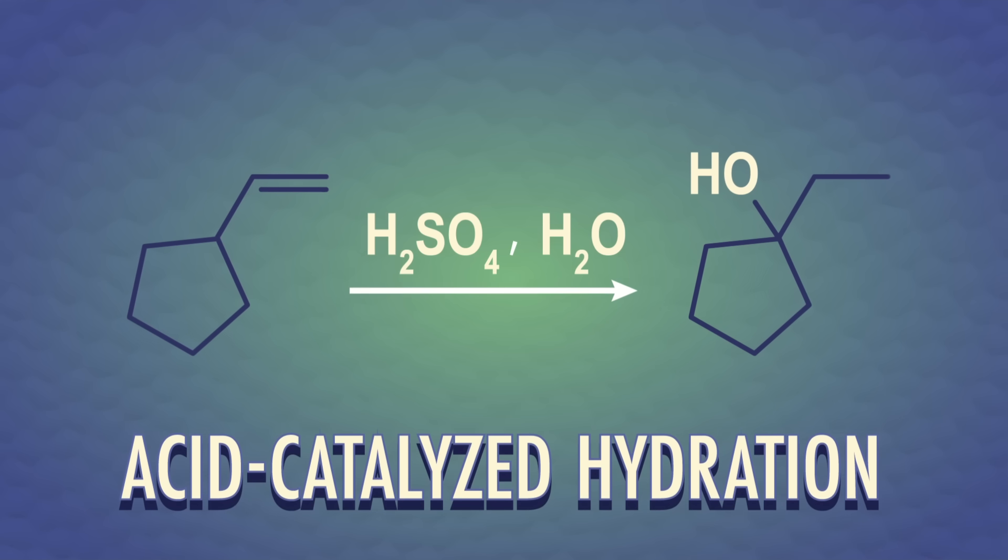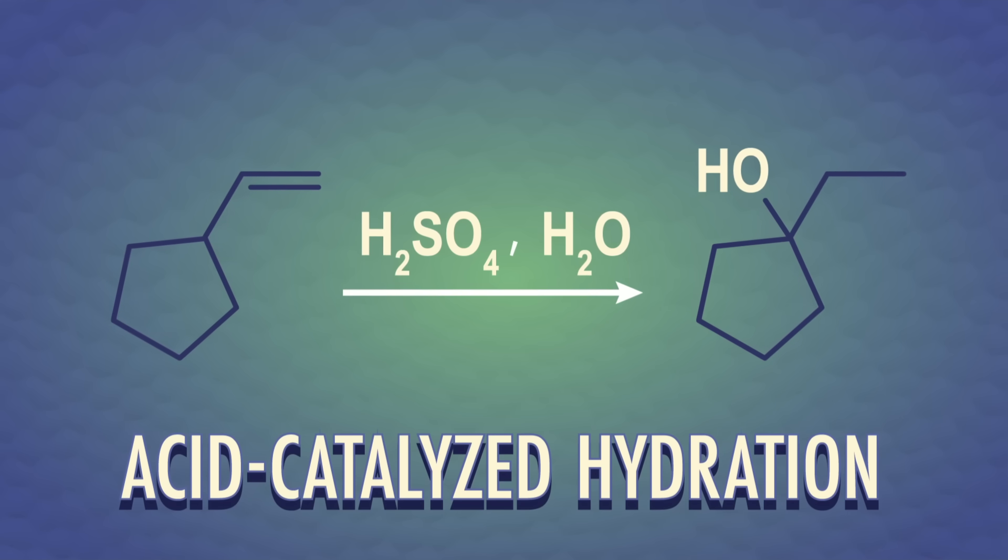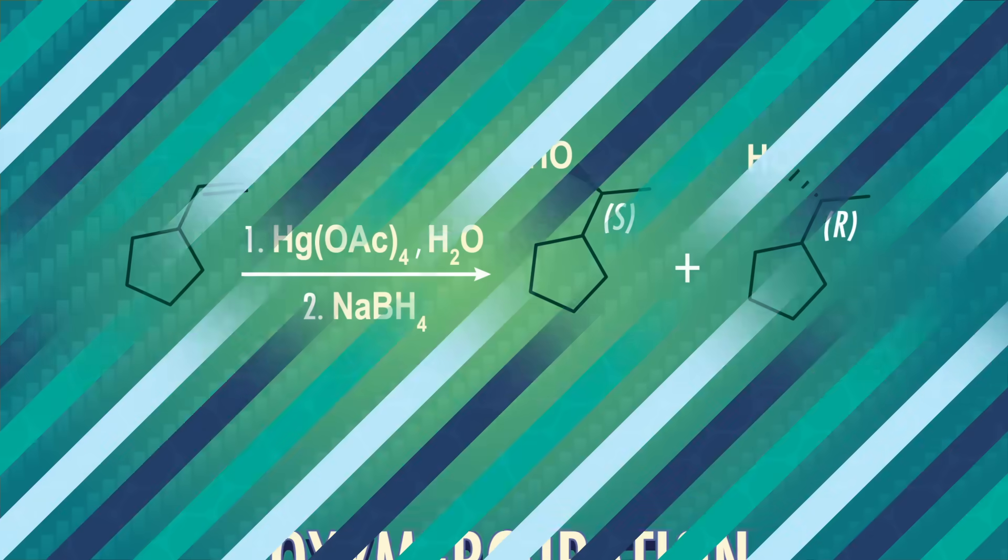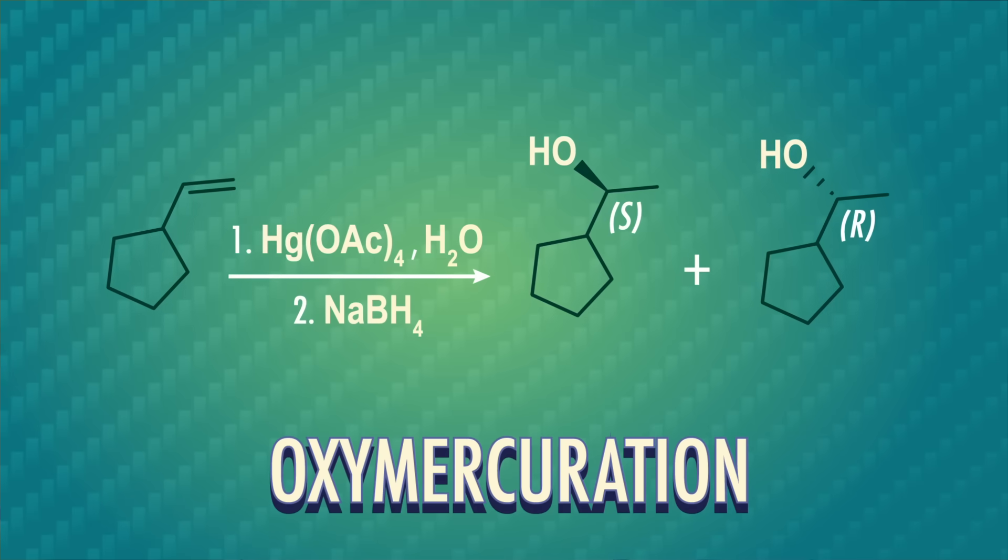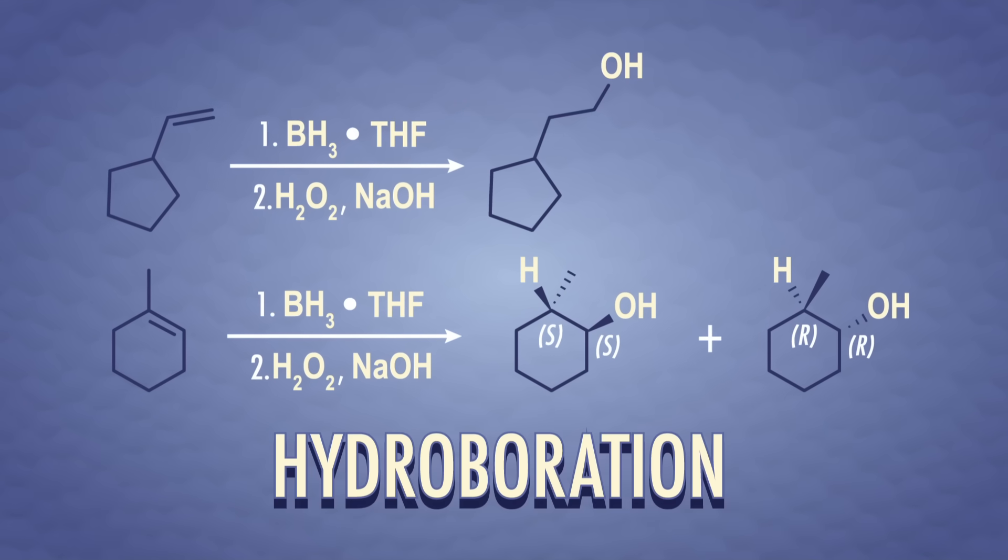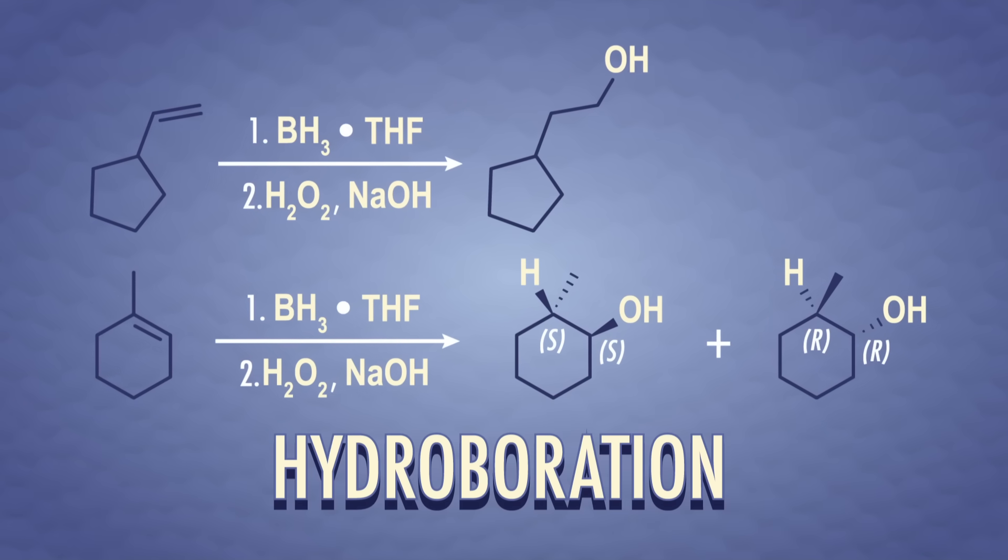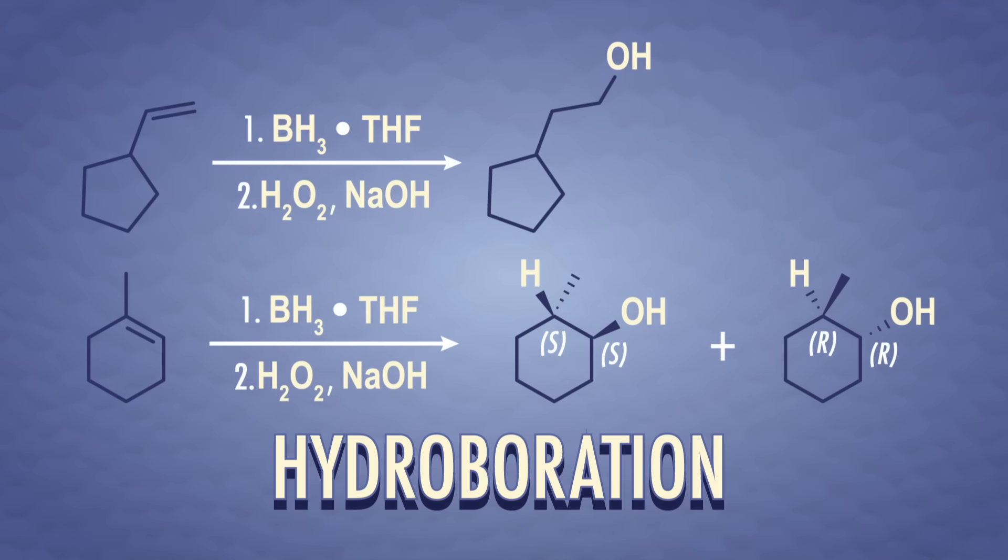Acid-catalyzed hydration has Markovnikov regioselectivity, is not stereoselective, and can have carbocation rearrangements. Oxymercuration has Markovnikov regioselectivity and blocks carbocation rearrangements. And hydroboration has anti-Markovnikov regioselectivity, syn stereochemistry, and no carbocation rearrangements. Depending on where we want the alcohol to end up, we can choose the perfect reagent, so remember to practice recognizing these patterns, even though they might be tricky at first.